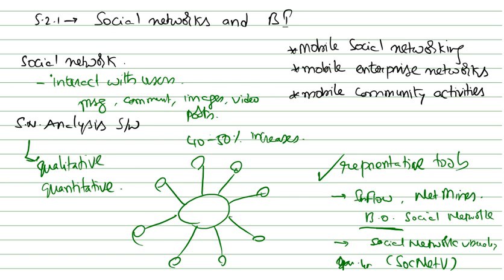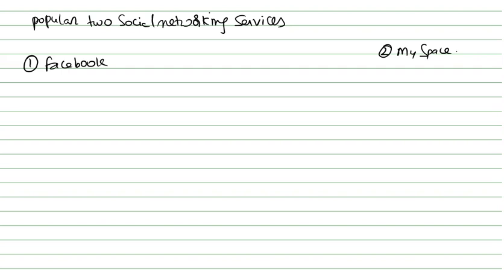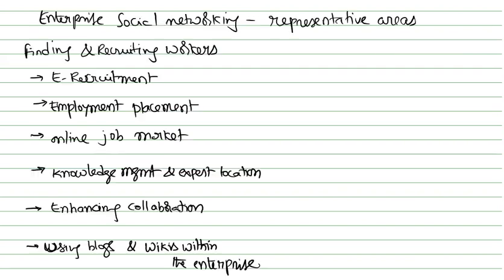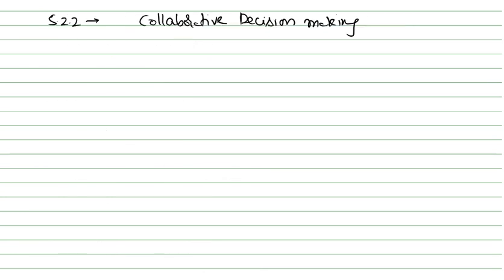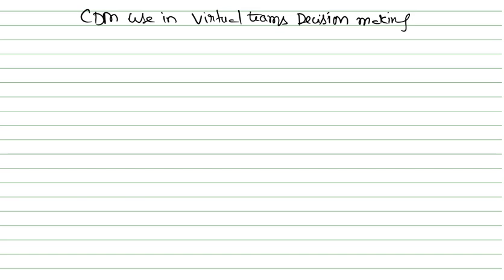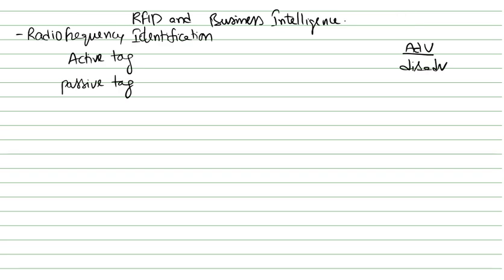In the next class we'll talk about mobile social networking, mobile enterprise networks, and mobile community activities. Once we finish this, we have one or two points left: popular social networking services like Facebook, finding e-recruitment, employment placement, online jobs, and enhancing collaboration using blogs. After that, we have collaborative decision making.